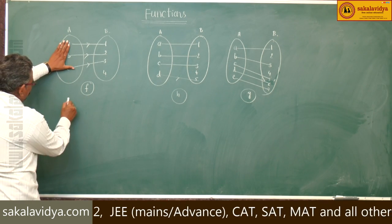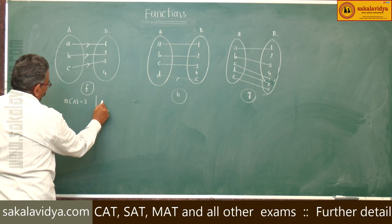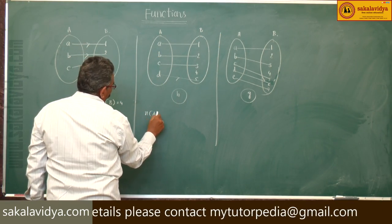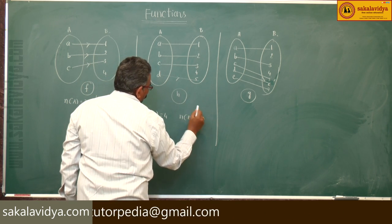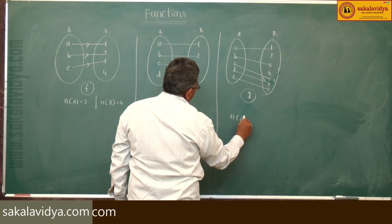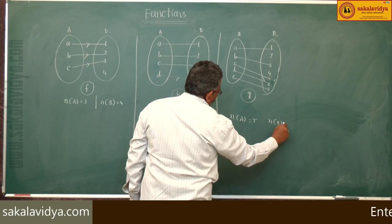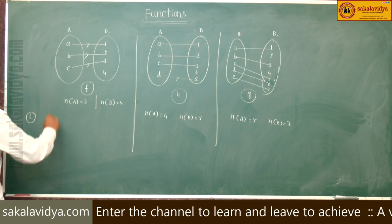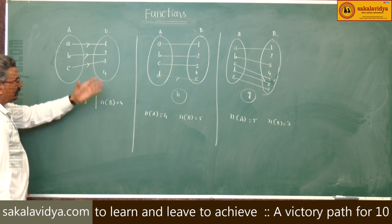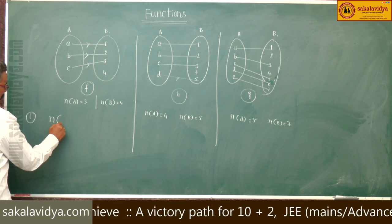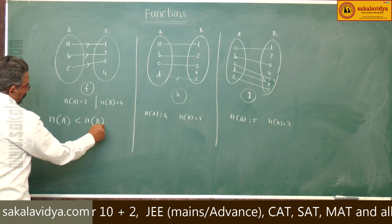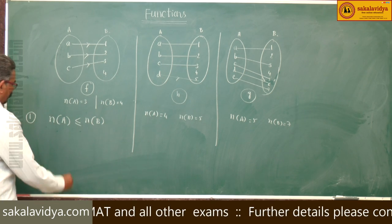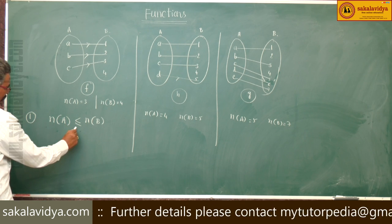Here, the number of elements is 3, n(A) is 3. Here n(B) equals 4. In this case, n(A) equals 4, n(B) equals 5. Here n(A) equals 5, n(B) equals 7. That means, from this we observe the first observation: if f or h or g is a one-to-one function, n(A) is always less than n(B) or may be equal. If n(A) less than or equal to n(B), then injection or one-to-one function is defined from A to B.